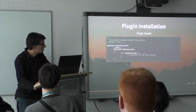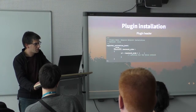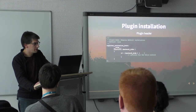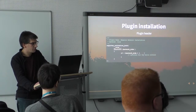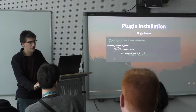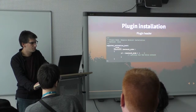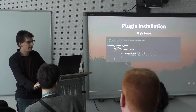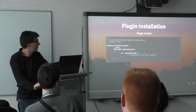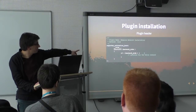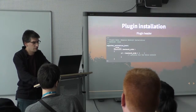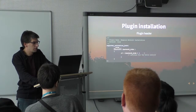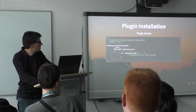For network plugins, there is a special header: 'Network: true' — it has to be written in lower case. There is no 'false'; you cannot prevent network activation just by the header. You have to register an activation hook and disable the plugin in your custom code if you don't want it active across the network.